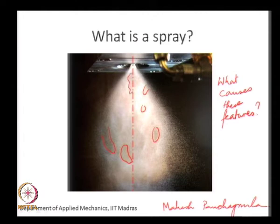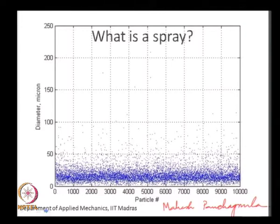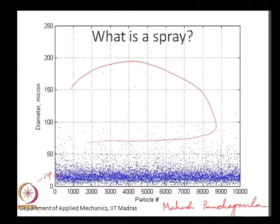What is the effect of having these kinds of features in an instantaneous snapshot? A spray by definition is very poly-disperse. This is an example of drop size distribution in a spray — as you can see there are drops mostly between 10 and 20 microns, but there are also a few drops that are very large.